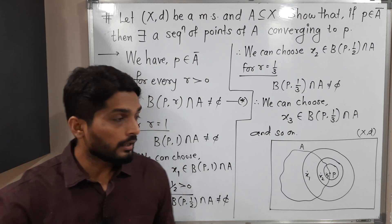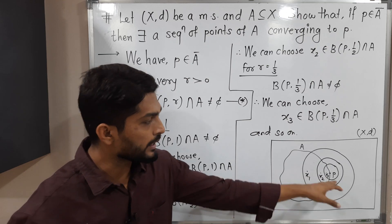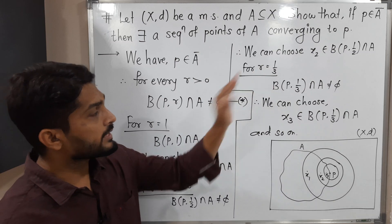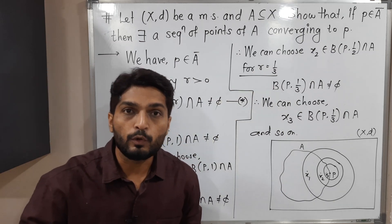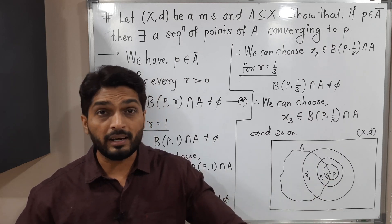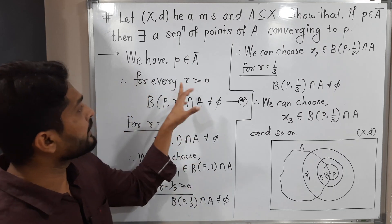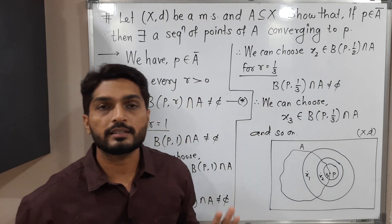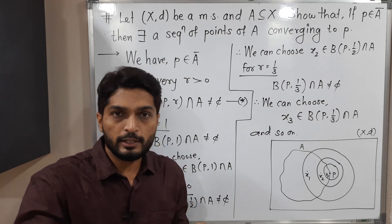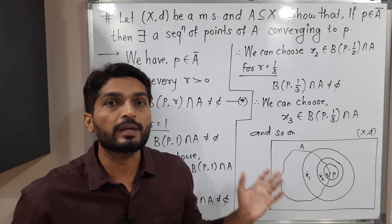In this way, I am constructing a sequence of points of A — X1, X2, X3. We can repeat this thing infinitely many times. This time we took r equal to 1/3, next time r equal to 1/4, then 1/5, 1/6, 1/7, 1/100, 1/1000. You can continue this process. It is true for every r greater than 0, and each time we can select one point — X1, X2, X3, X4, X10, X100, X1000, and so on. In this way, we are getting a sequence.